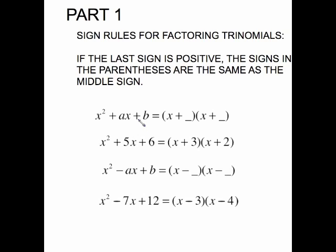Example right here, last sign was positive, the middle is positive, therefore both signs are positive. And this is one of those simple ones, what two numbers multiply to give you 6 that add to give you 5? It has to be 2 and 3.